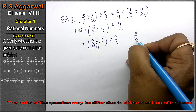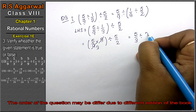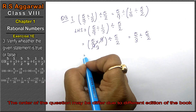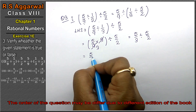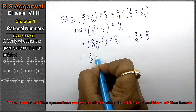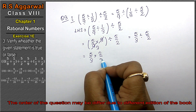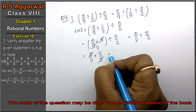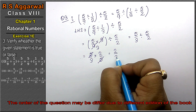We get 5/3 ÷ 5/2. So: 5/3 multiplied by 2/5. The 5s cancel, giving us 2/3. So the left-hand side equals 2/3.